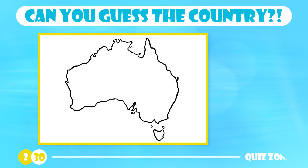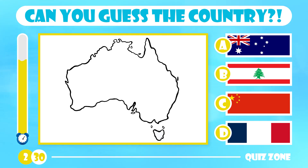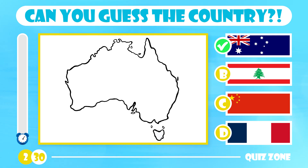Can you name this country? Is it Australia, Lebanon, China or France? The correct answer is Australia. Australia is a large country in Oceania and the world's sixth largest country by landmass. Known for its unique wildlife and hot, arid climate, Australia is a popular holiday destination for many.